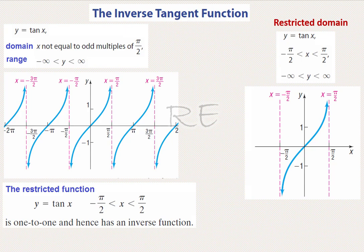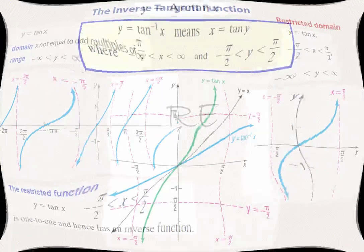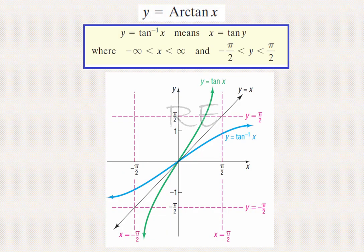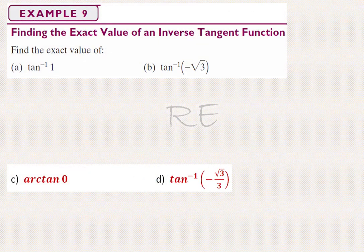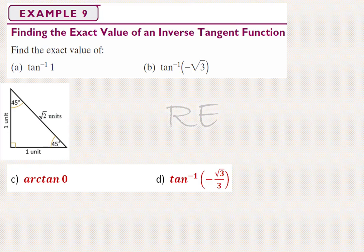That function is y = arctan(x), where x is between negative infinity and infinity, and the range y is strictly between negative π/2 and π/2. Find the exact value of arctan(1), or inverse tan of 1.